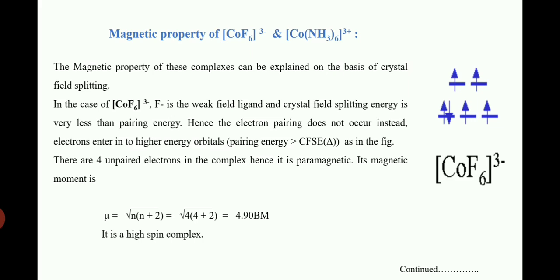This complex contains four unpaired electrons, making it paramagnetic in nature. To find the effective magnetic moment, we put n = 4 into the equation: μ = √(n(n+2)) = √(4×6) = 4.90 BM. Due to the presence of a weak field ligand, it is a high spin complex.